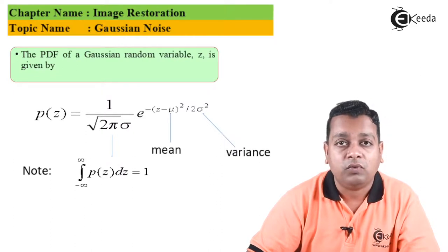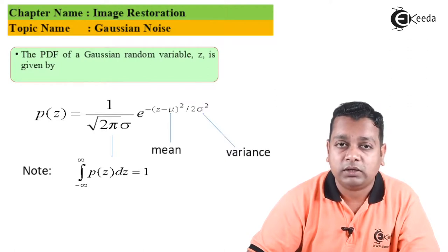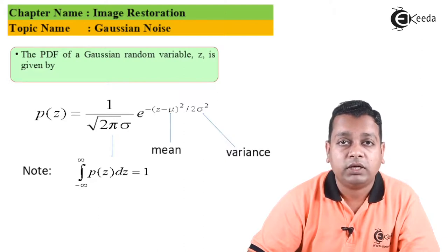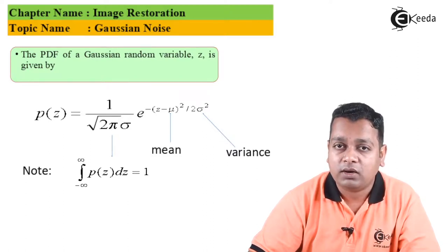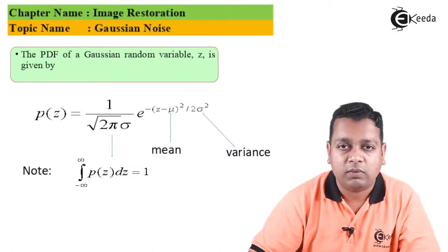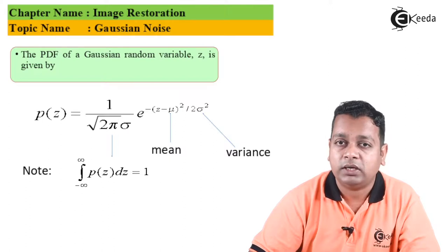p(z), representing the probability density function, can be given by 1 over square root of 2πσ, multiplied by exponential e to the power minus (z - μ)² divided by 2σ². In the formulation of the PDF for Gaussian noise, we have the parameters π, which is a constant, σ, μ, and z, where z represents the random variable.